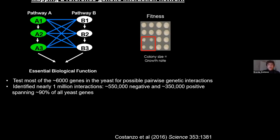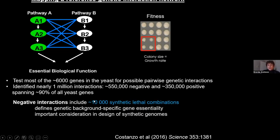In a project we finished a few years ago, we tested most of the 6,000 genes in the yeast genome for possible pairwise genetic interactions — an all-by-all approach testing about 18 million different gene pairs. This project identified a million genetic interactions, including 550,000 negative interactions and 350,000 positive interactions, spanning most of the yeast genes. We consider this a complete reference genetic interaction network. The negative interactions include 10,000 synthetic lethal combinations, essentially defining genetic-background-specific gene essentiality in this yeast strain — important for designing synthetic genomes or synthetic bioprocess pathways.